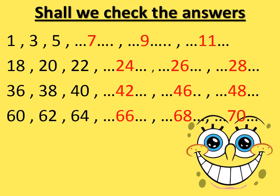So for the first number pattern, the answers are 1, 3, 5, 7, 9, 11. Second one: 18, 20, 22, 24, 26, and 28. Third one: 36, 38, 40, 42, 46, and 48. And the last one: 60, 62, 64, 66, 68, and 70. Did you get all the answers correct? Well done.